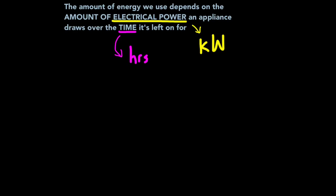So this is how we work it out. The amount of energy we use depends on the amount of electrical power an appliance draws from the main supply over the time it's left on for. Here, electrical power is measured in kilowatts and time is measured in hours. Now this logically makes sense. If we switch an electrical device on, then it will be drawing power from our mains. Depending on how much power it draws is dependent on the time we leave it on for. The longer we leave it on for, and the more power it draws, the more we have to pay.